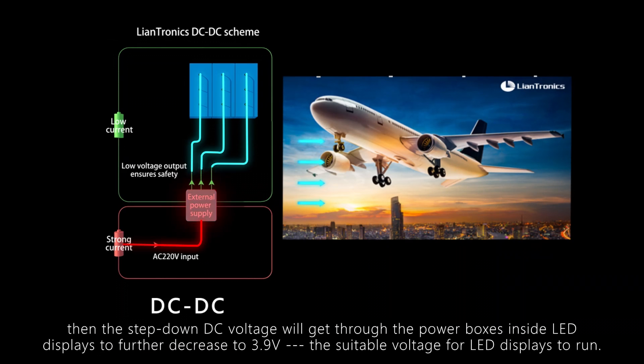Then the step-down DC voltage will get through the power boxes inside LED displays to further decrease to 3.9V, the suitable voltage for LED displays to run.